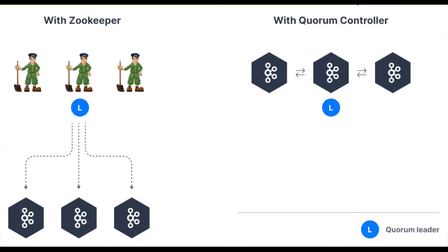If you take a look at the diagram, this was the previous architecture where ZooKeepers were responsible for setting up the coordination between Kafka brokers and essentially setting up the quorum between all the brokers. But in KRaft mode, the Raft consensus runs inside the brokers themselves. We don't need ZooKeepers; rather, the quorum is maintained by the quorum controller nodes which are configured within the Kafka broker.